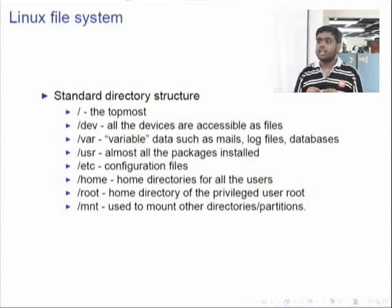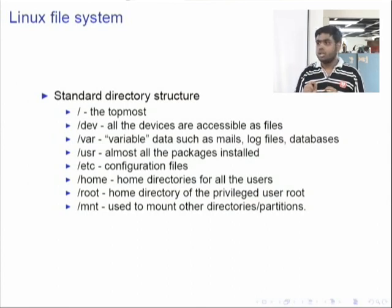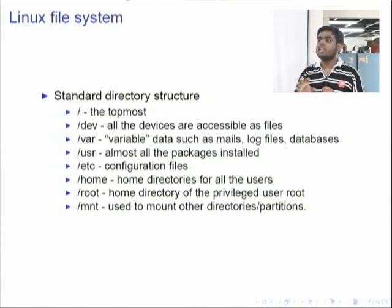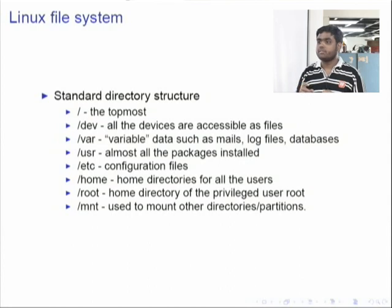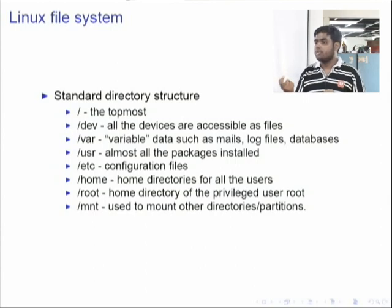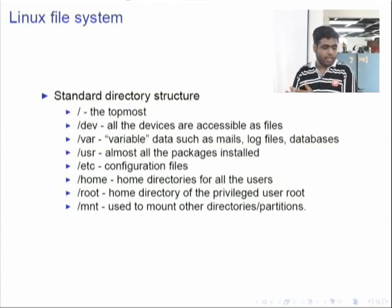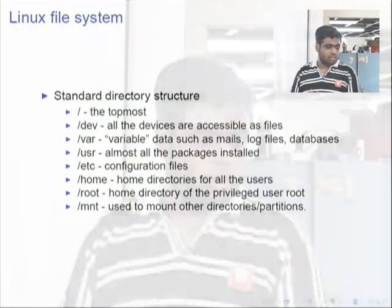/home contains home directories for all users present on the system. /root is the home directory for the root user, who is privileged and can install and do everything on the system. /mnt is generally used for mounting other devices — for example, if you want to use a pen drive, you first need to mount it onto some folder. We will now see commands used to retrieve file attributes.